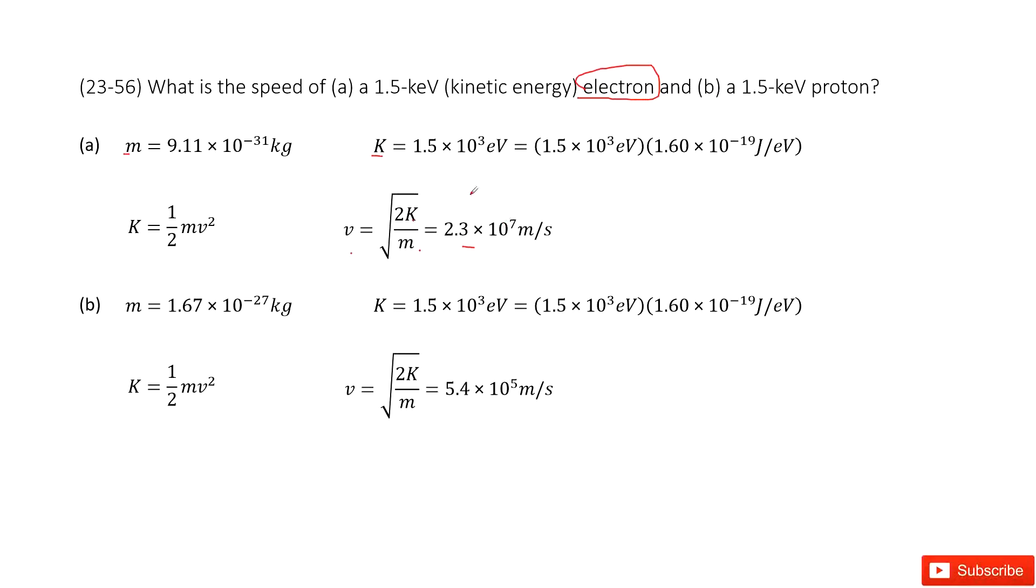Similarly we need to find speed of a proton and the kinetic energy is given as 1.5 keV, right? So in this case we can see the mass of a proton. You can check your textbook, right? It is there. And the kinetic energy is there.